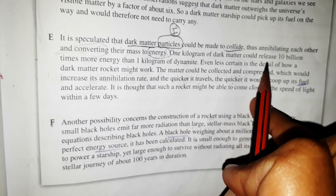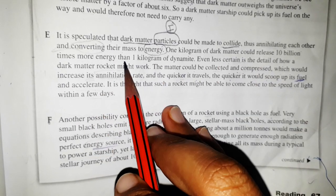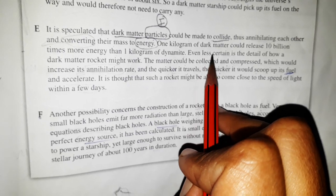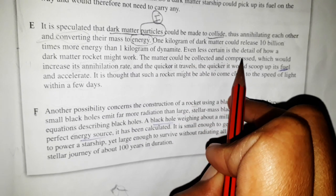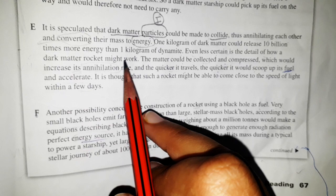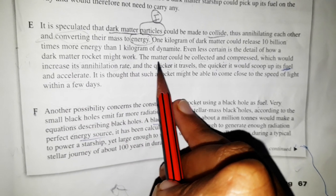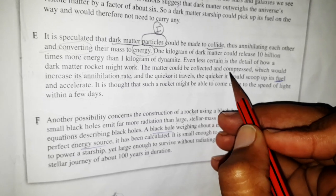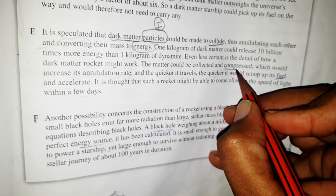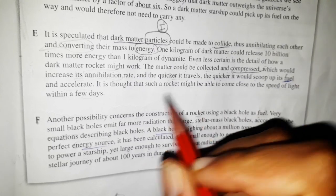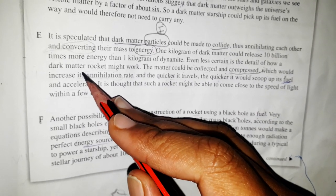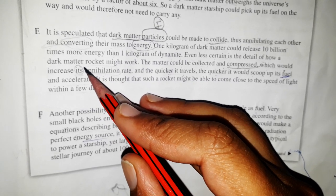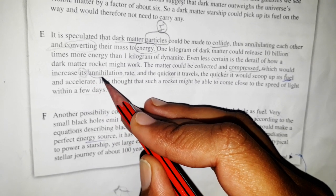One kilogram of dark matter could release 10 billion times more energy. There's no information about what we want. Even less certain is the detail of how a dark matter rocket might work. The matter could be collected and compressed, which would increase its... we got 'its' in the question. With what does it increase? Its annihilation rate. So we get our third answer here.